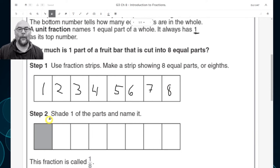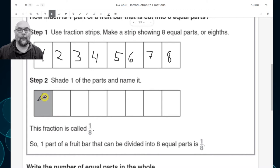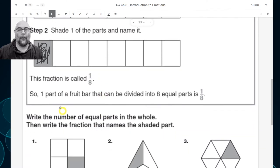Step two, shade one of the parts, and name it. So we're going to shade one part here, just like this, just like that on the example, and name it. This fraction is called one-eighth. See? One-eighth. So one part of a fruit bar that can be divided into eight equal parts is one-eighth.